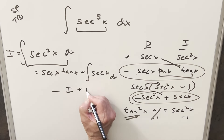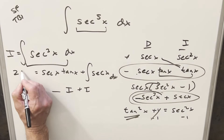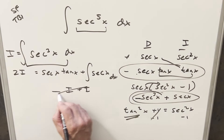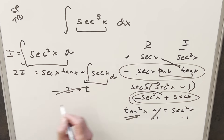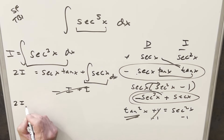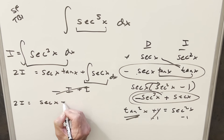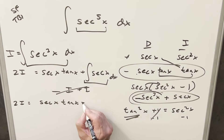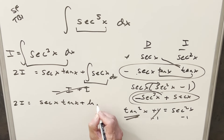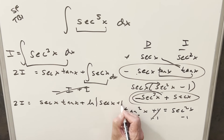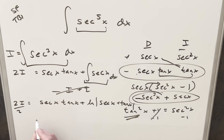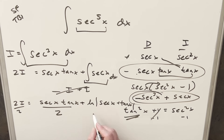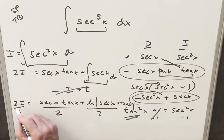Let's add I to both sides. The left side becomes 2I, and that eliminates the minus I on the right. For the integral of secant x, I'll use the formula: it's just natural log of the absolute value of secant x plus tan x. Dividing both sides by two to isolate I gives us one half secant x tan x plus one half natural log |sec x + tan x|. I'm running out of room over there.